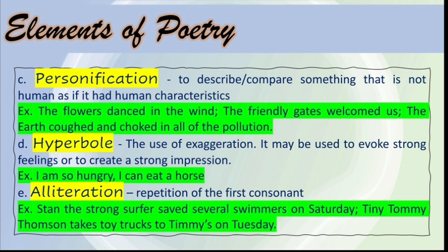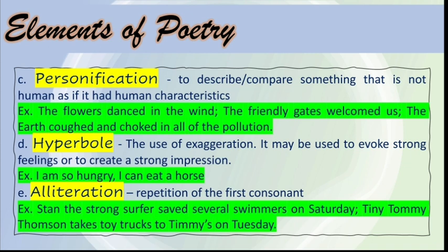Next is alliteration — it is the repetition of the first consonant sound in your sentence. Examples: 'The strong surfer saved several swimmers on Saturday.' 'Tiny Tommy Thompson takes toy trucks to Timmy's on Tuesday.' Most of the words in each sentence start with the same consonant. Next is assonance — it is the repetition of internal vowel sounds. Example: 'Princess Kitty will kiss Timmy T. Tipper's lips' — notice the repetition of the short 'i' sound. Another example: 'The pain may drain Drake, but maybe the weight is fake' — this has a repeated long 'a' sound.